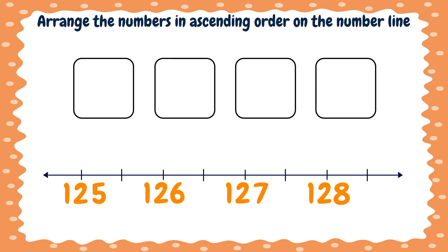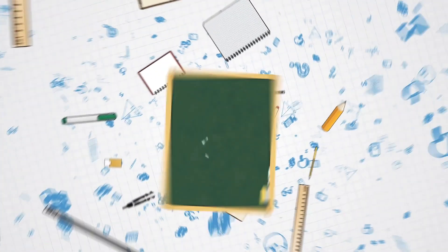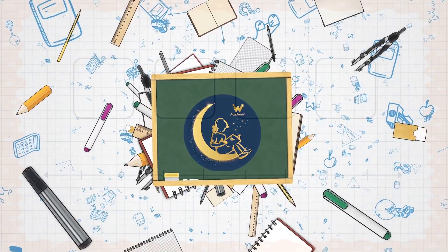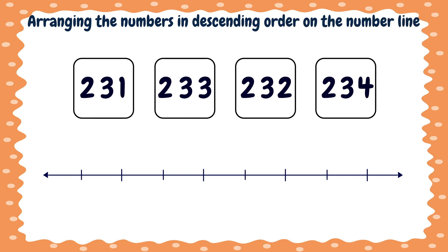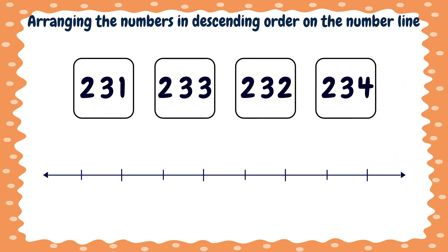How do we arrange the numbers on the number line in descending order? Let us find out together. Here are the numbers. We want to arrange them in descending order on the number line. In descending order means we will put the numbers from right to left and from largest to smallest. The first step is to determine the place values. Ones, tens, and hundreds. The second step, we will compare the hundreds place. Let's start.